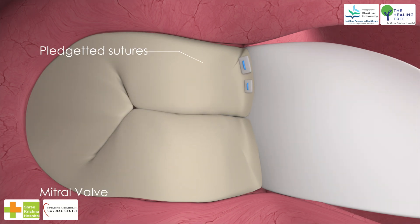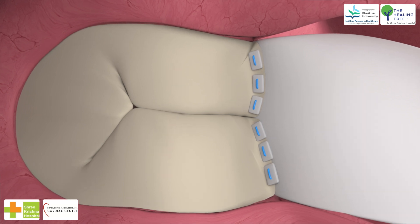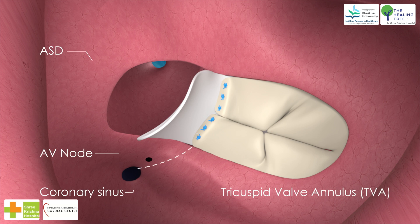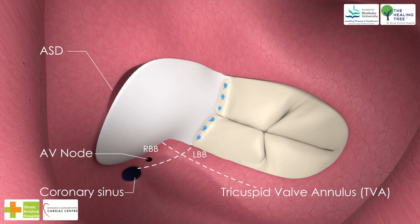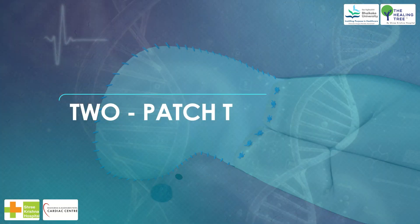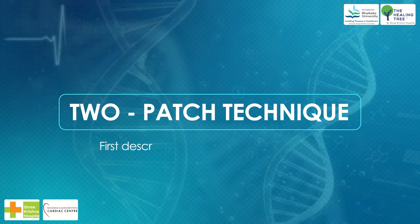In addition, pledgeted sutures are placed with the pledgets lying on the mitral side. Step 7: following resuspension of the superior and inferior common leaflets, the cleft of the new mitral valve is closed, as for the cleft associated with a primum ASD. The primum ASD component of the complete AV canal is closed as for closure of an isolated primum ASD, placing the coronary sinus on the left atrial side of the patch.